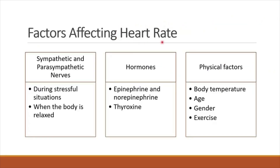There are many factors that affect heart rate. The factors include sympathetic and parasympathetic nerves, hormones, and physical factors — all extrinsic factors influenced from outside that affect the heart rate. Heart rate increases during stressful situations, for example, missing a deadline to submit a report. Sympathetic nerves speed up the SA node, which increases the heart rate and also increases the strength of contraction of the heart.